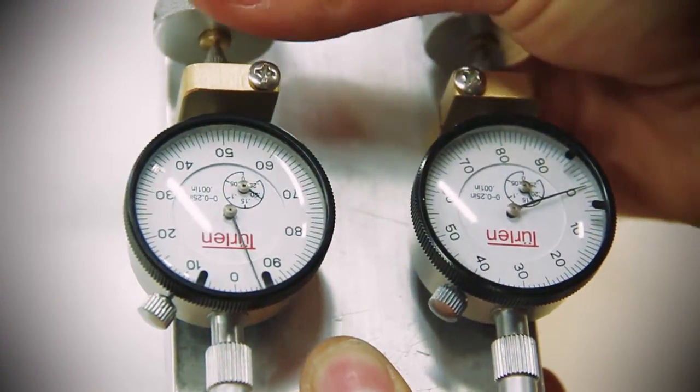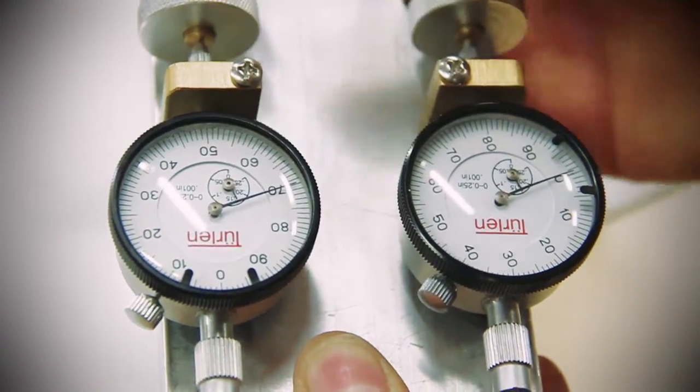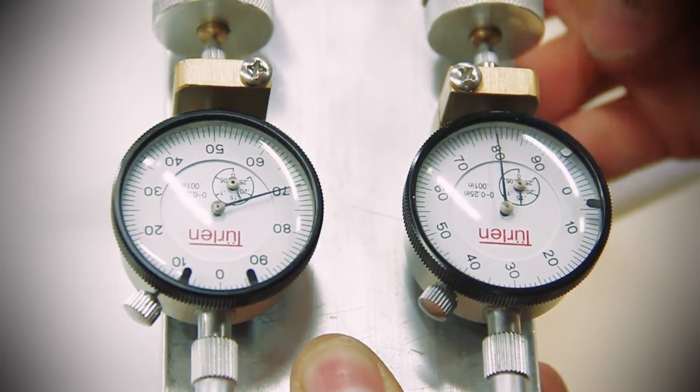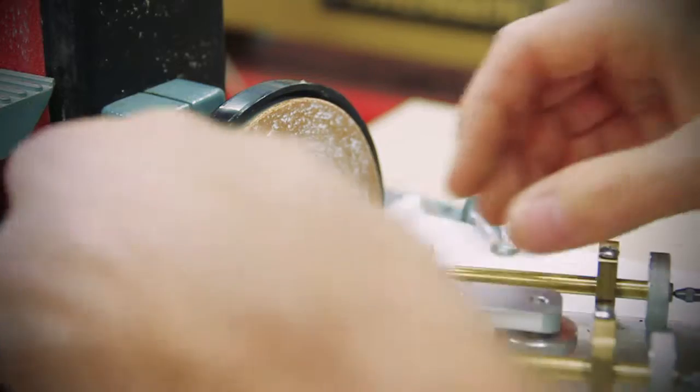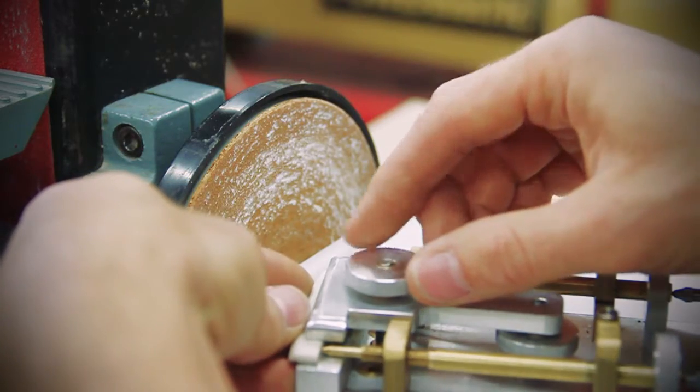With the saddle again clamped loosely in the tool in the same orientation, advance the rods forward the corresponding amount on each side. Run the saddle through the sanding process again and the final height is achieved.